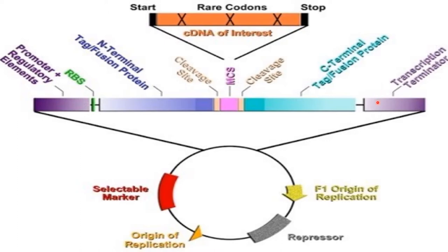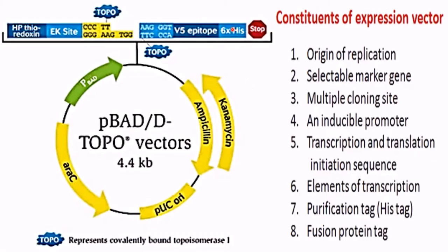On the other side of the cleavage site there will be a C-terminal tag or fusion protein, followed by transcription termination. Apart from these, there are selectable markers, origin of replication, a repressor site, and even an f1 origin of replication present in the expression vector. The histidine tag, which is the purification tag, is present in the insert.